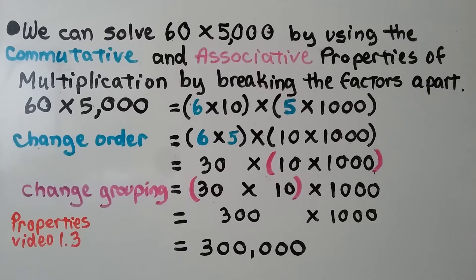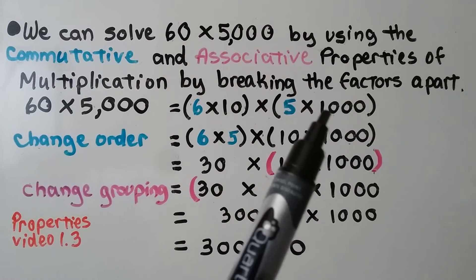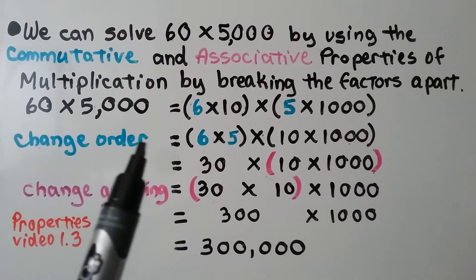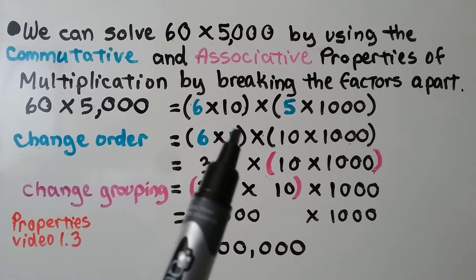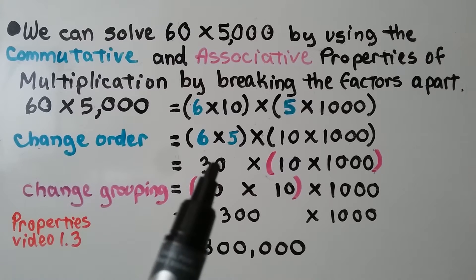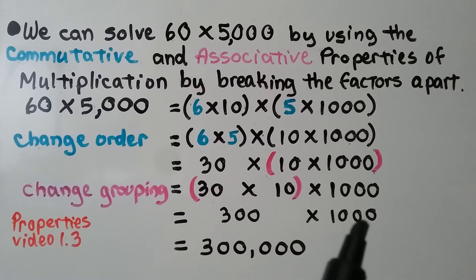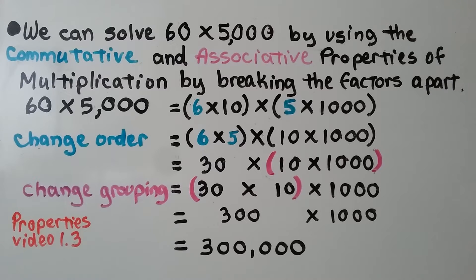We can solve 60 times 5,000 using the commutative and associative properties by breaking the factors apart. 60 equals 6 times 10, and 5,000 equals 5 times 1,000. Using the commutative property, we rearrange to get 6 times 5 in parentheses, times 10, times 1,000. That gives us 30 times 10 times 1,000. Grouping 30 times 10 together gives 300, and 300 times 1,000 equals 300,000. A link to our video on commutative and associative properties is in the description as video 1.3.